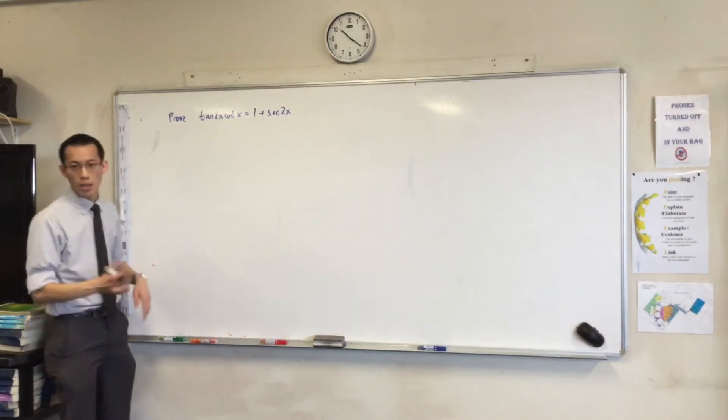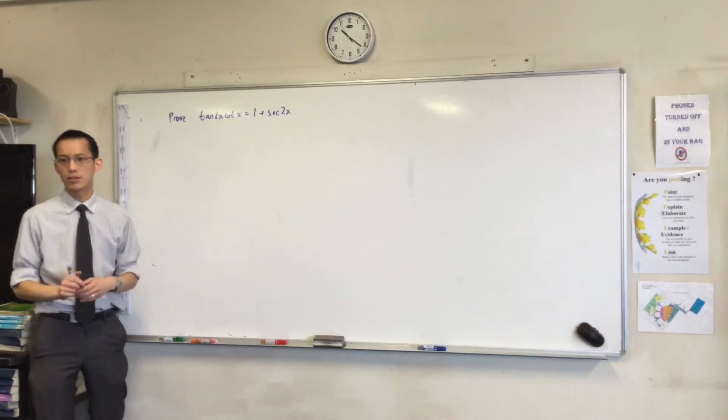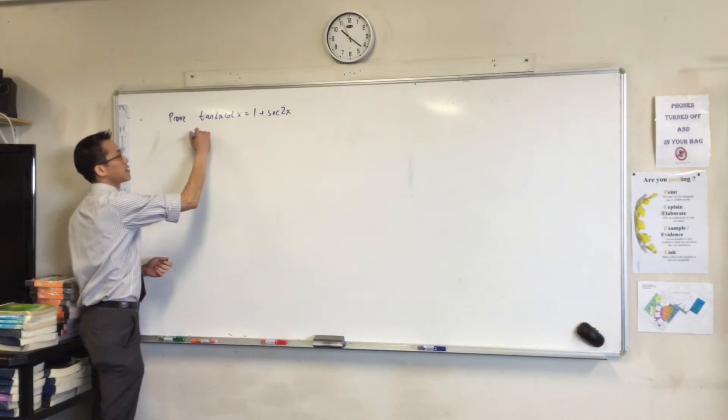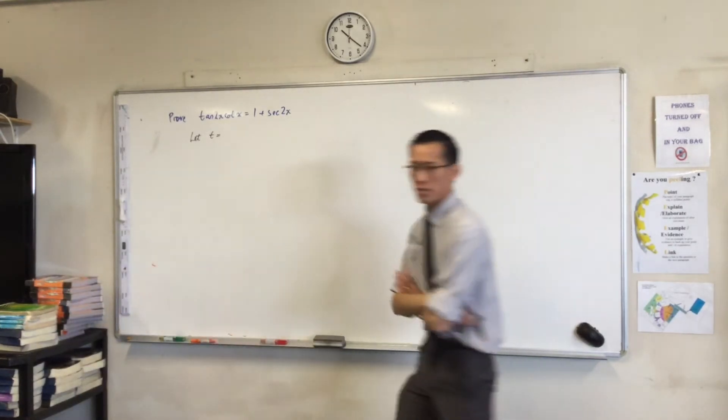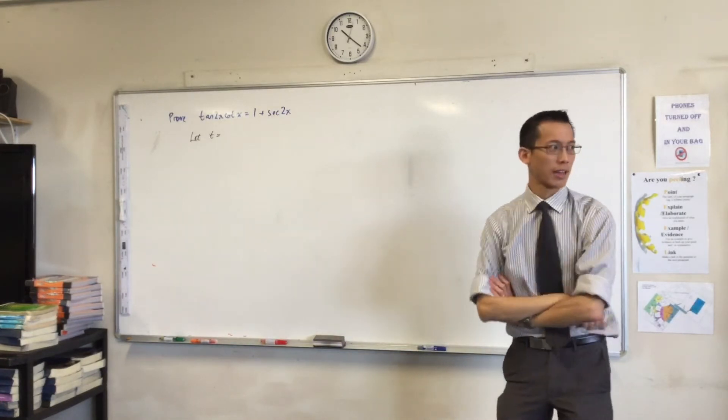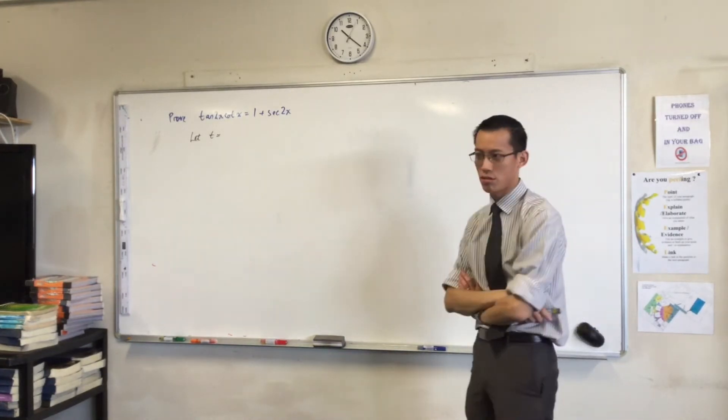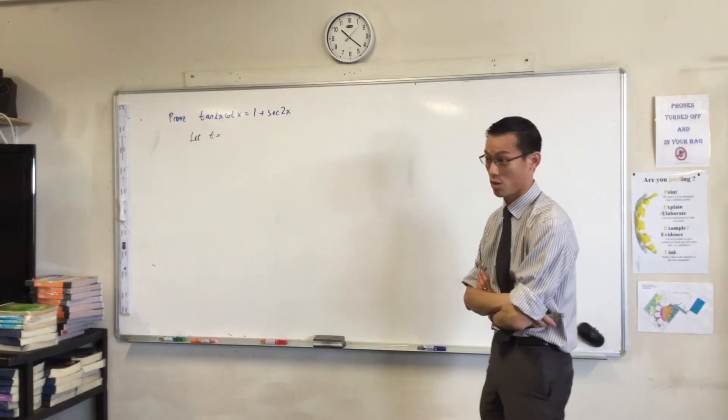The first thing you've got to set up is, how am I going to use t-results? So I'm going to say let t equal... Now, it usually is tan theta on 2, usually. First reason it's not tan theta on 2 is because there are no thetas. So that's no use.